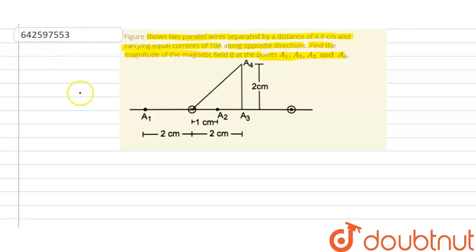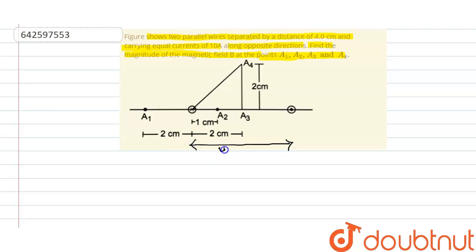What is given to us: there are two wires — current flowing out of the plane for wire one and current going inside the plane for wire number two. The separation between them is 4 centimeters. Point a3 is situated in the middle of these two wires, at 2 centimeters from each wire.